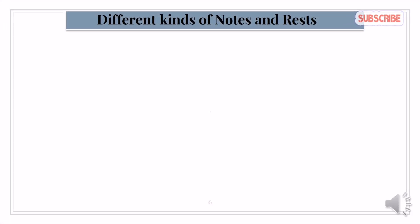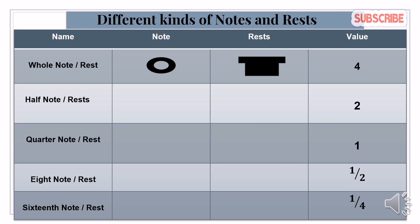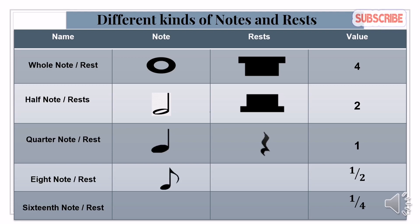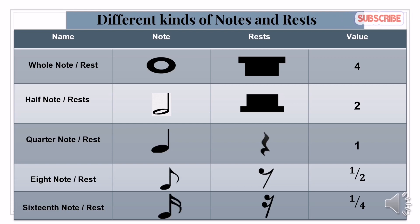Different kinds of notes and rest: Whole note and whole rest has a value of 4. Half note and half rest has a value of 2. Quarter note and quarter rest has a value of 1. Eighth note and eighth rest has a value of one half. Sixteenth note and sixteenth rest has a value of one fourth. How many kinds of notes and rest are there in the chart?